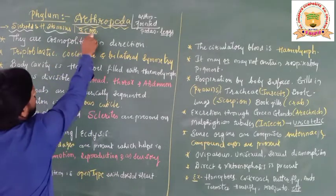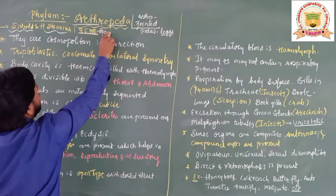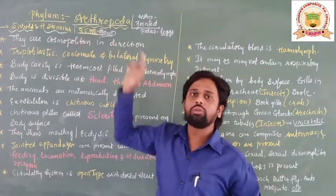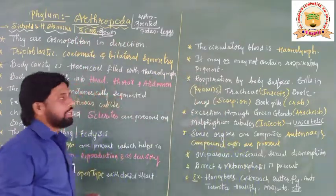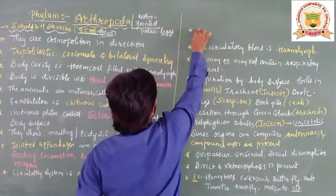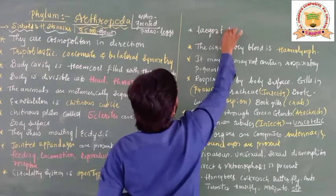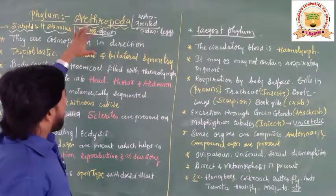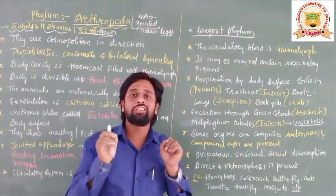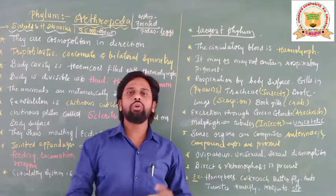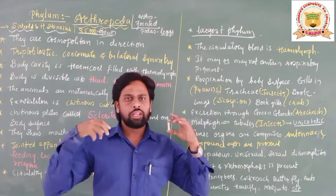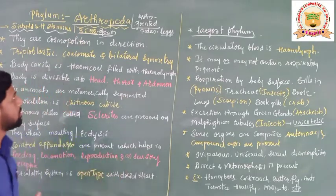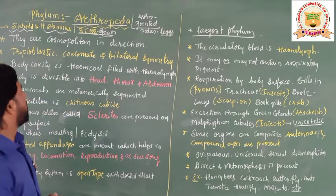Phylum Arthropoda includes near about 85,000 to 90,000 species on the earth. That is the reason it is considered one of the largest phyla in the entire animal kingdom. Wherever you look in your surroundings, there are lots of insects and flies — all these are included under phylum Arthropoda.